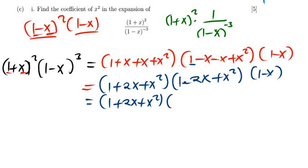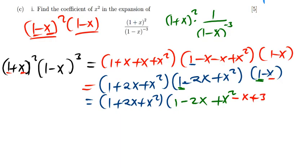Now expanding 1 minus 2x plus x squared times 1 minus x: 1 times 1 is 1, 1 times negative 2x gives negative 2x, 1 times x squared gives x squared. Then moving to negative x: negative x times 1 is negative x, negative x times negative 2x is positive 2x squared. Then negative x times x squared gives negative x cubed.